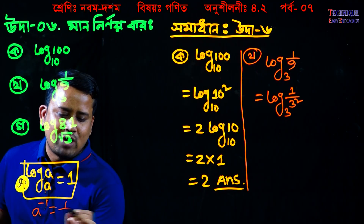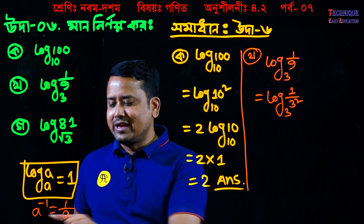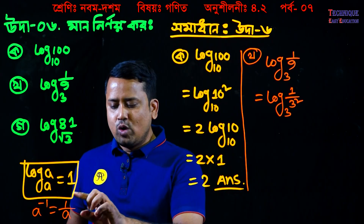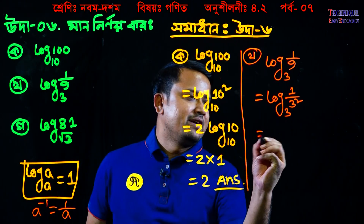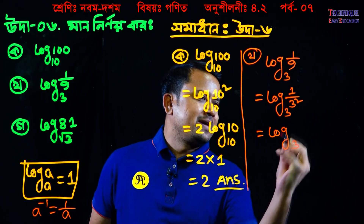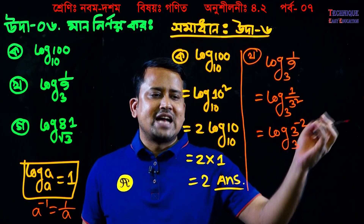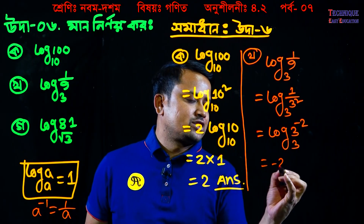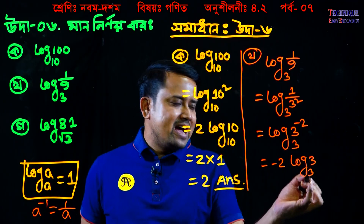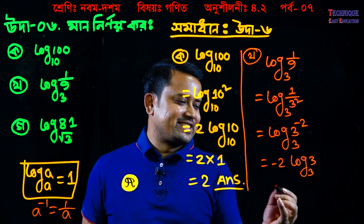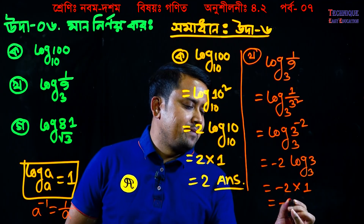Here, to the power minus one, so one by a. A to the power minus one is one by a. One by a squared is a to the power minus two. There is one by a squared, so three to the power minus two. The power is minus two, so log base a of a gives minus two.